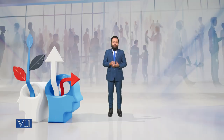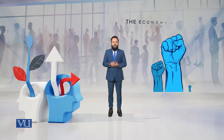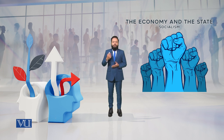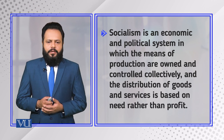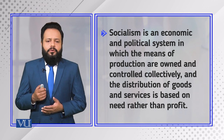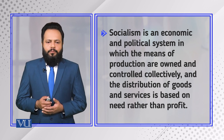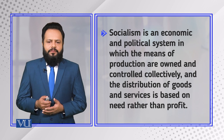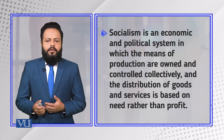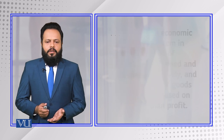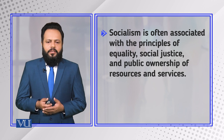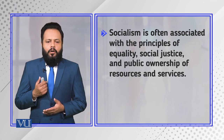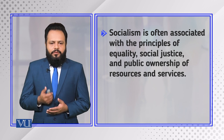Dear students, in this module we are going to discuss economy and the state from a socialistic point of view. Socialism is an economic and political system in which the means of production are owned and controlled collectively, and the distribution of goods and services is based on need rather than profit. Socialism is often associated with the principles of equality, social justice, and public ownership of resources and services.